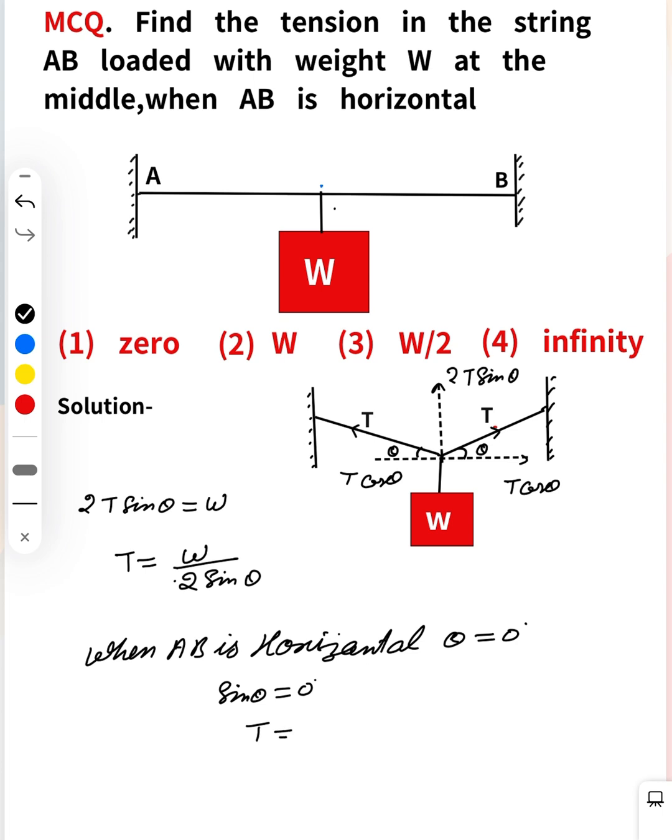We get W upon 2 into 0, that is W by 0, which is infinity. So you can say that tension is infinity if AB is horizontal. So the fourth option is the correct option. If you have any doubt, comment it and I will discuss it.